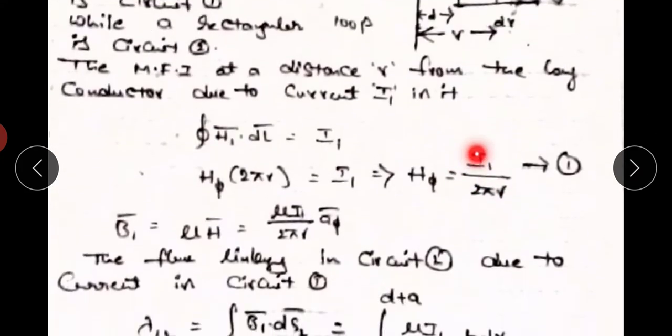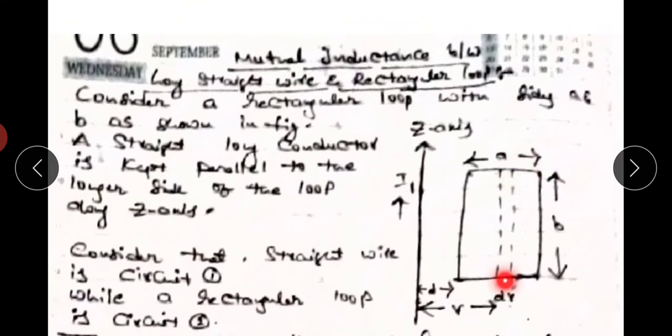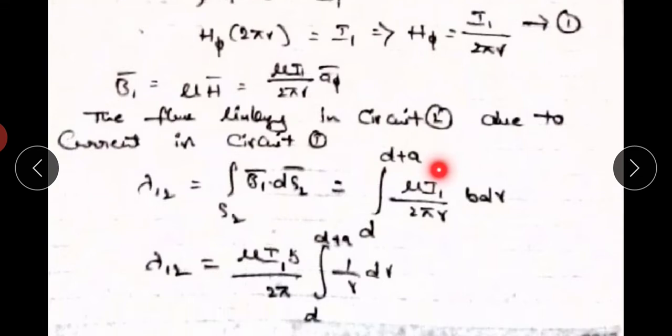The integral becomes: λ₁₂ = integral from d to d+a of μI₁ / 2πR · dS₂. The differential surface area dS₂ = B · dR, where B is the height of the rectangle. So λ₁₂ = μI₁B / 2π · integral from d to d+a of (1/R) dR = μI₁B / 2π · [ln R] from d to d+a = μI₁B / 2π · (ln(d+a) − ln d).